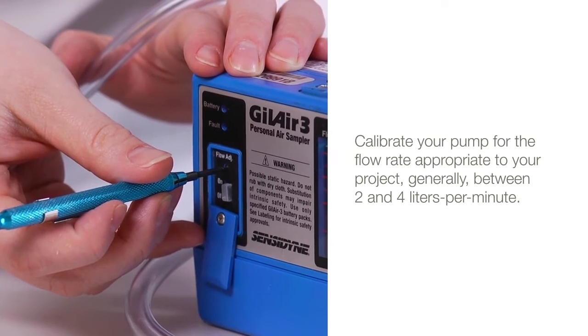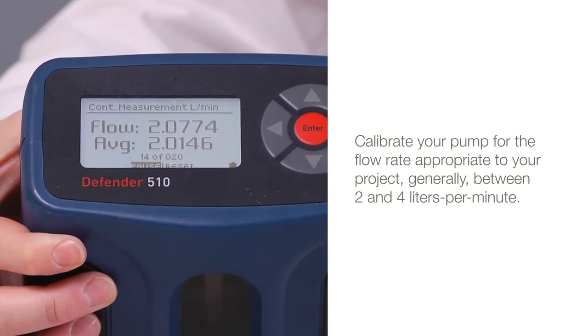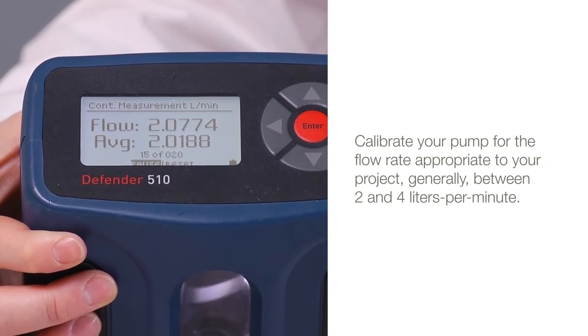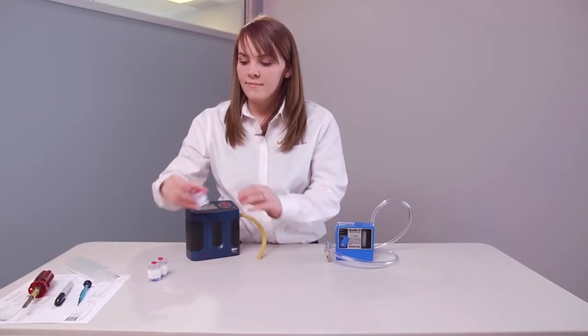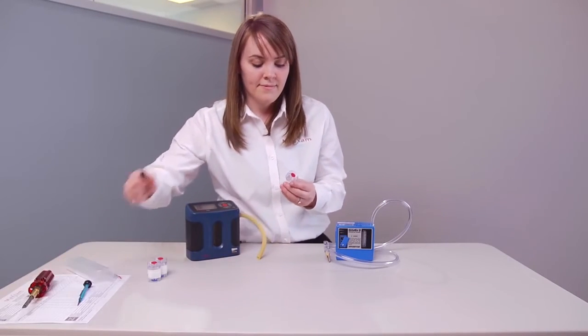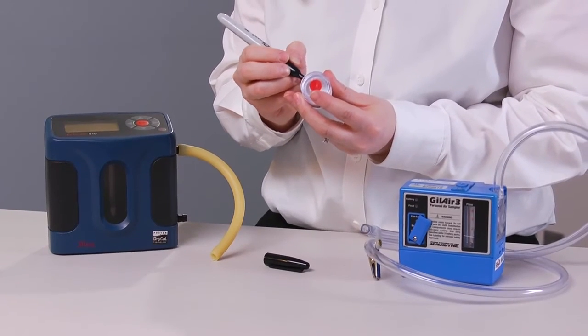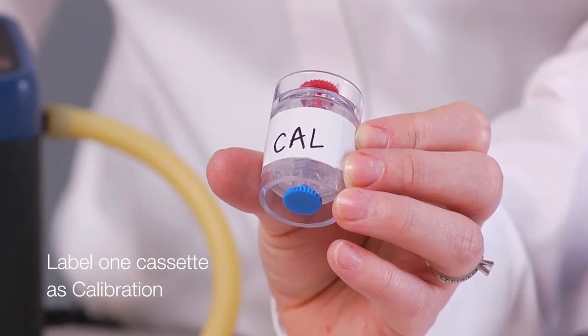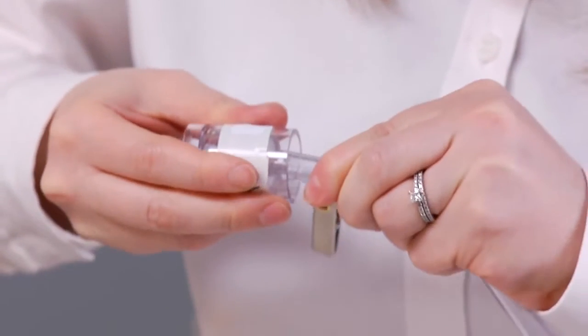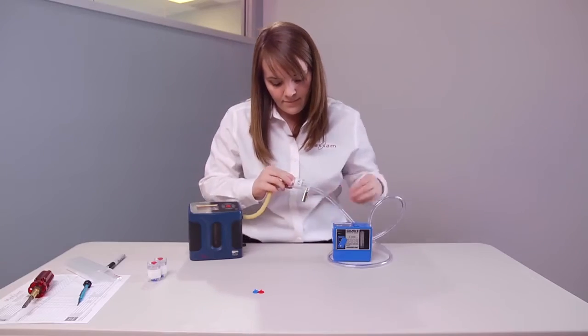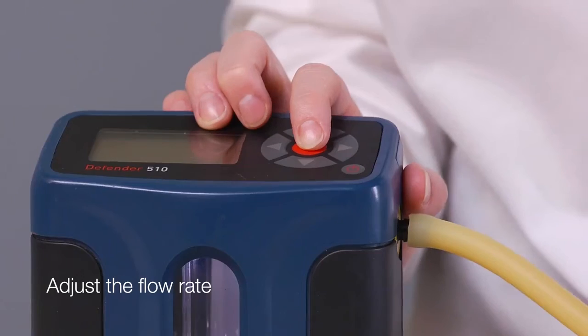First, calibrate your pump for the flow rate appropriate to your project, generally between 2 and 4 liters per minute. A cyclone can be used for sampling, and in that case, use the flow rate and procedures specified for the cyclone. We will show sampling without a cyclone. Again, the key is to collect samples open-faced. Label the cassette as calibration and follow routine calibration procedures. Connect the cassette, calibrator, and pump together, and then adjust the flow rate.